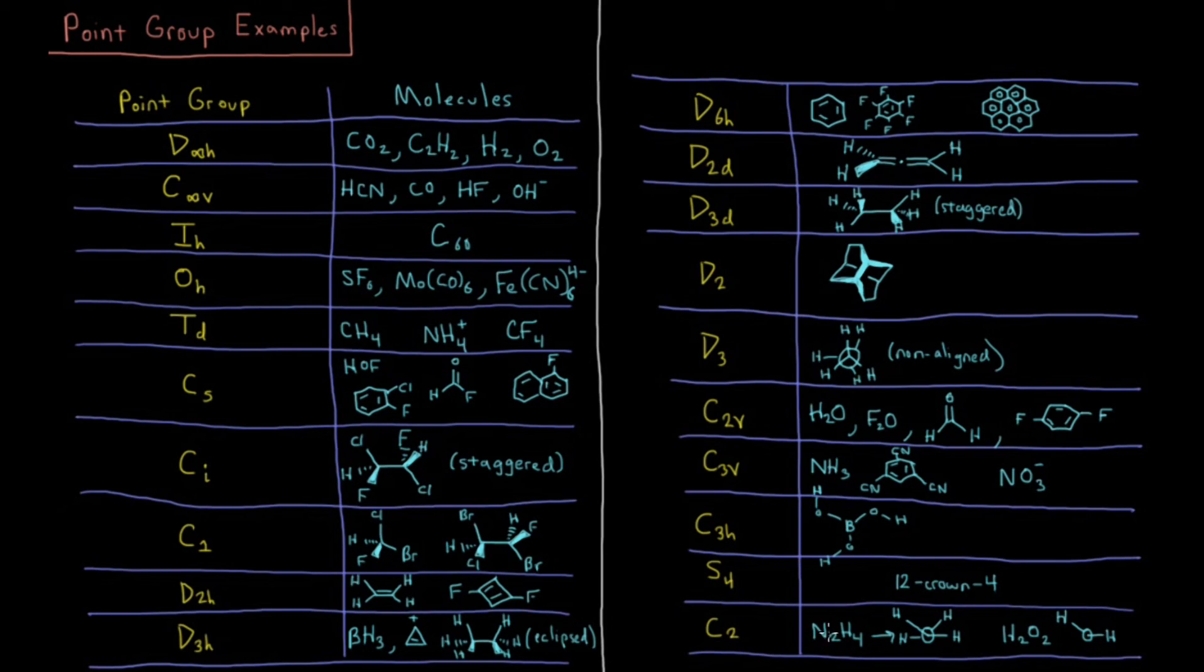C2, something like hydrazine N2H4, how they're in this kind of offset configuration. Notice that it's not aligned in this configuration. Or H2O2, hydrogen peroxide, again, if it's not aligned, if they're not perfectly aligned in the plane or anti to the plane, it'll have this type of C2 symmetry.